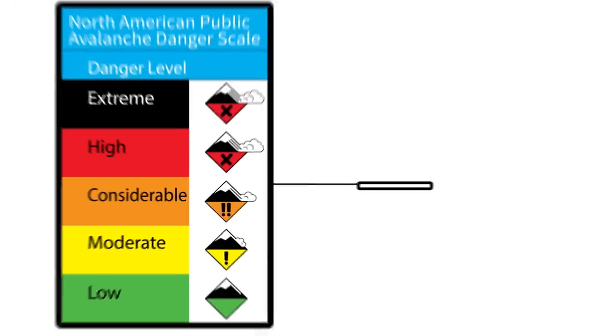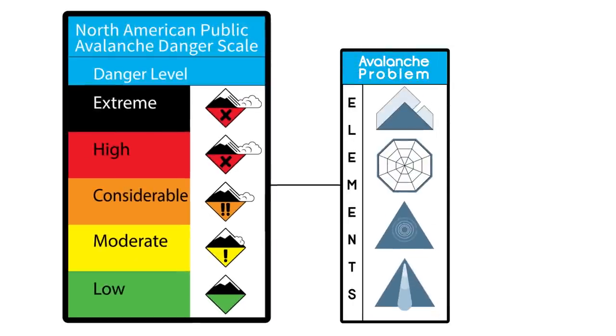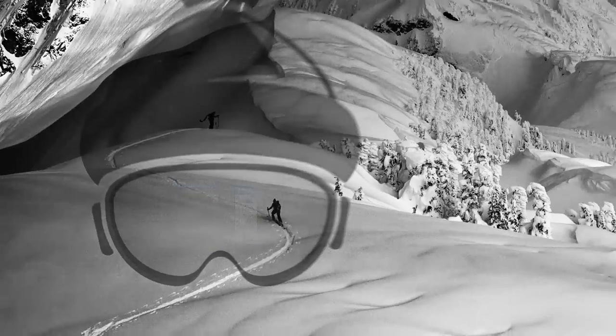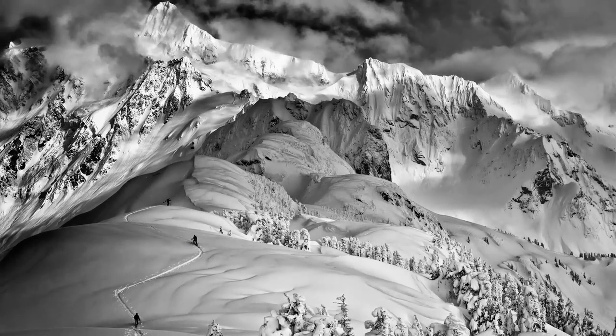The avalanche danger is a broad brushstroke of daily conditions. Avalanche problems are an extension of the danger scale and allow you, the traveler, to better visualize the danger and make decisions based upon the kind of avalanche you may encounter.